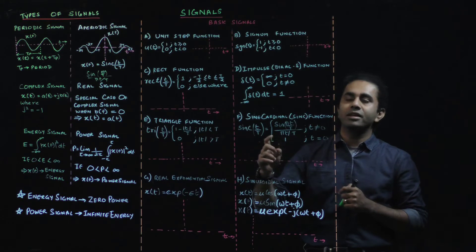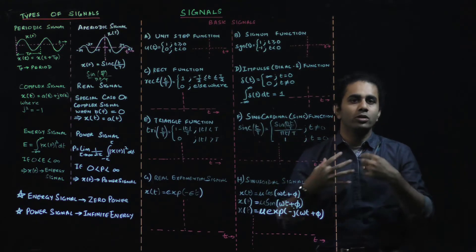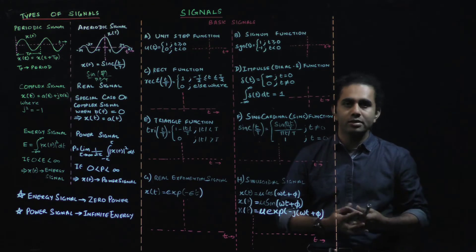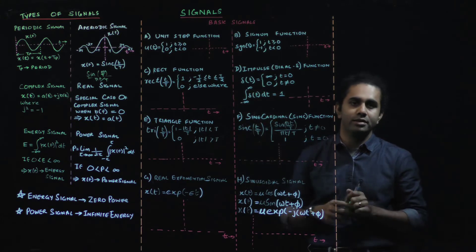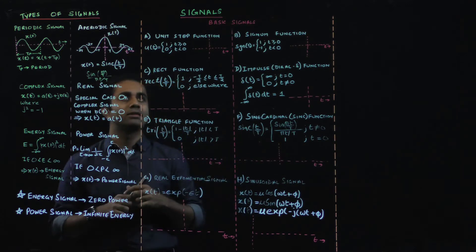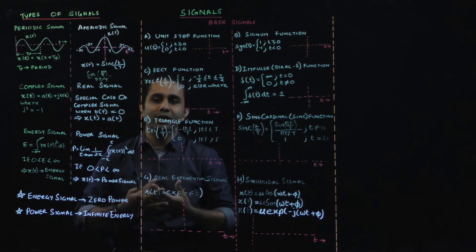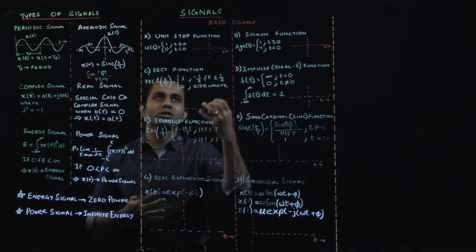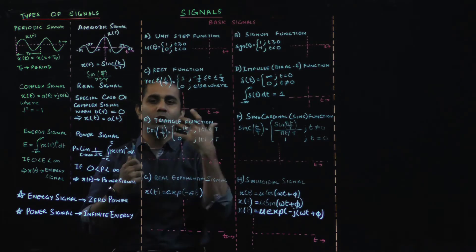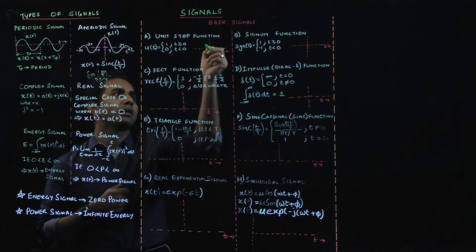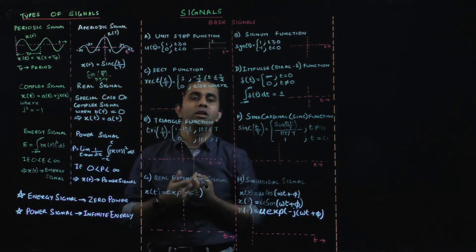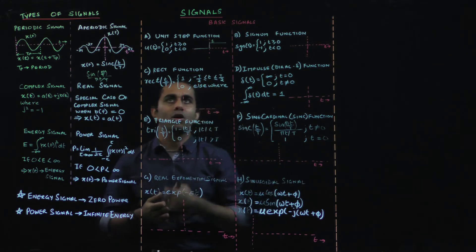Now we look at the basic signals, which form the basis for many other signals — a lot of other signals can be expressed as a combination of these. The first is the unit step function, defined simply as: for any value of time greater than 0, the signal value is 1; for anything less than that, the value is 0. Plotting this gives your unit step signal.